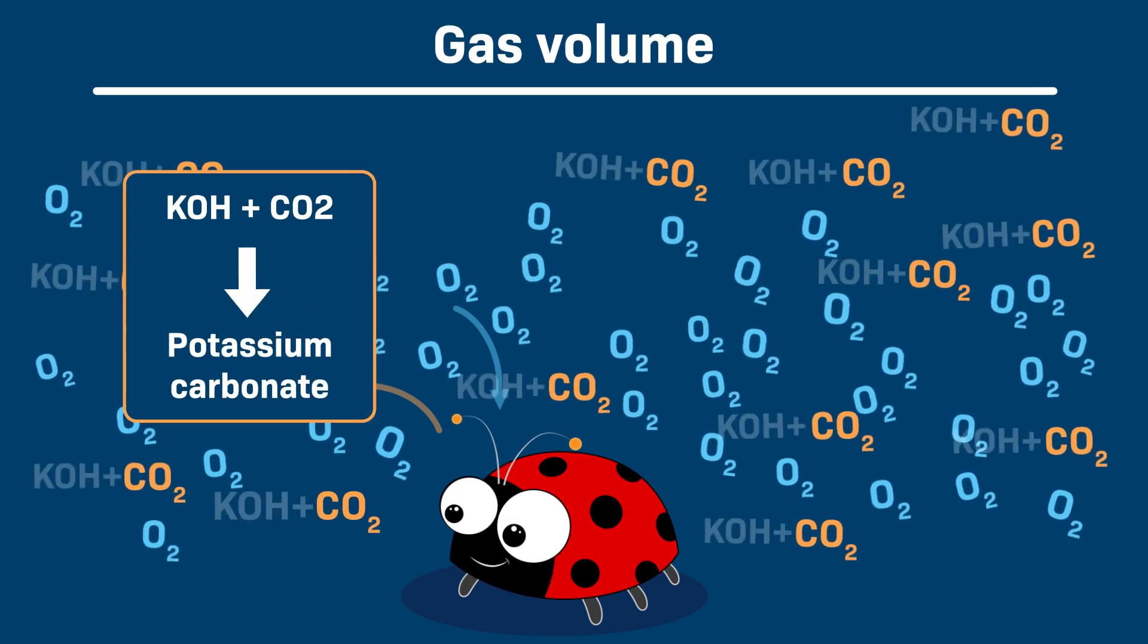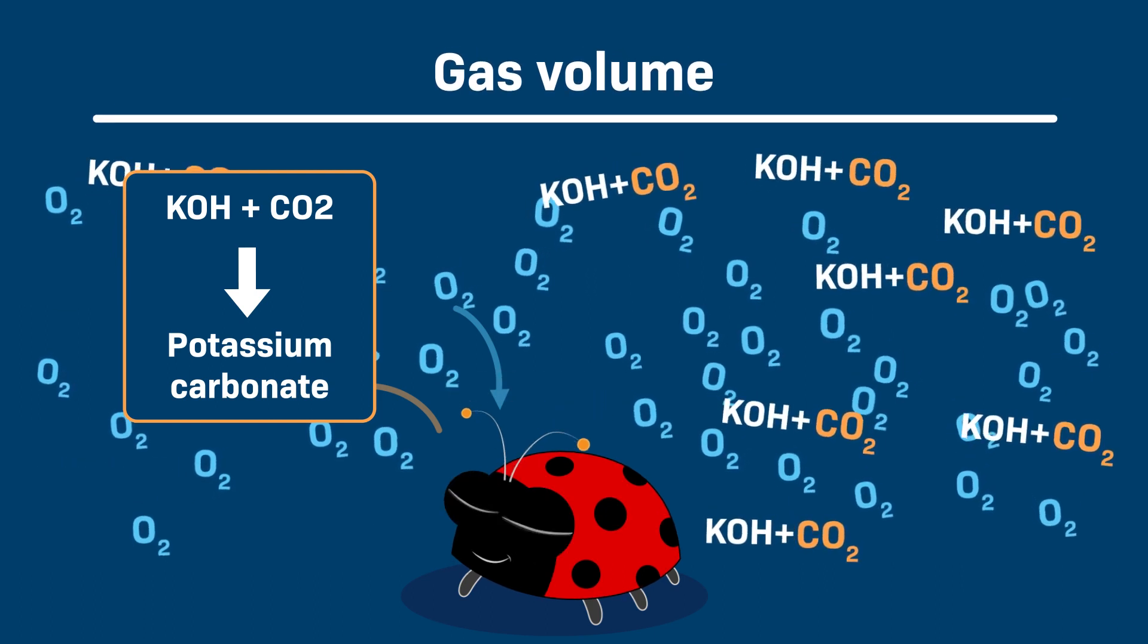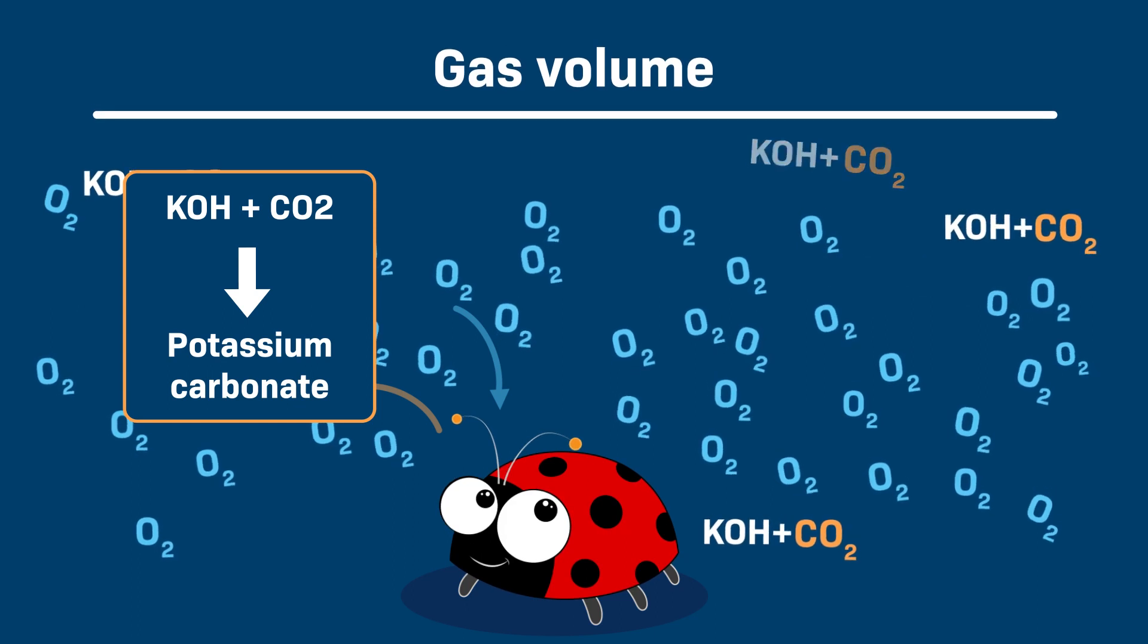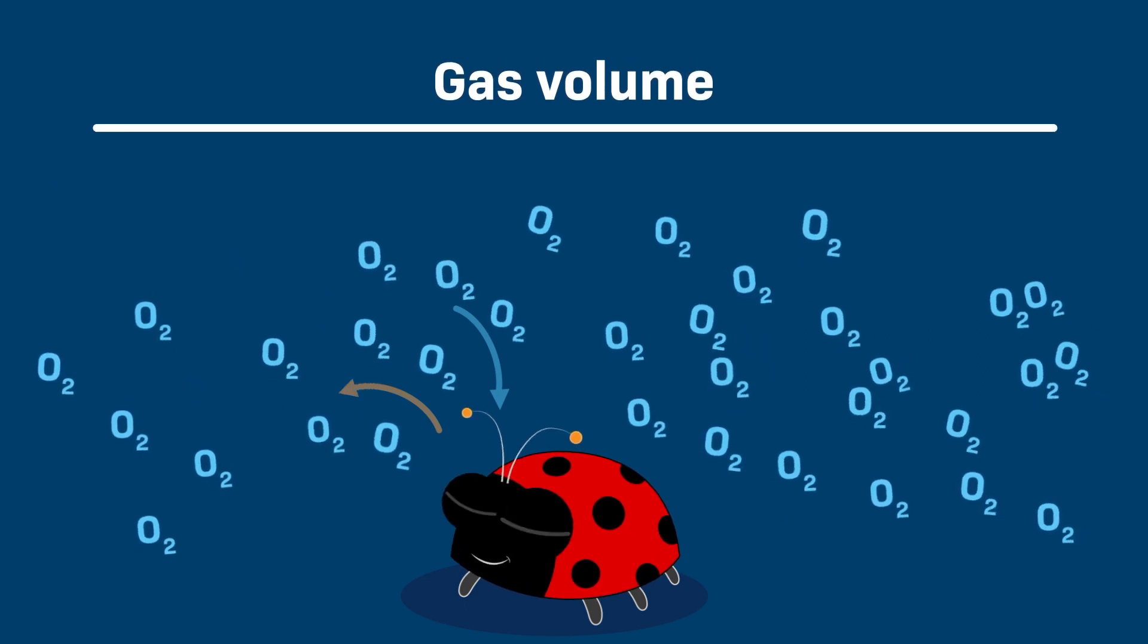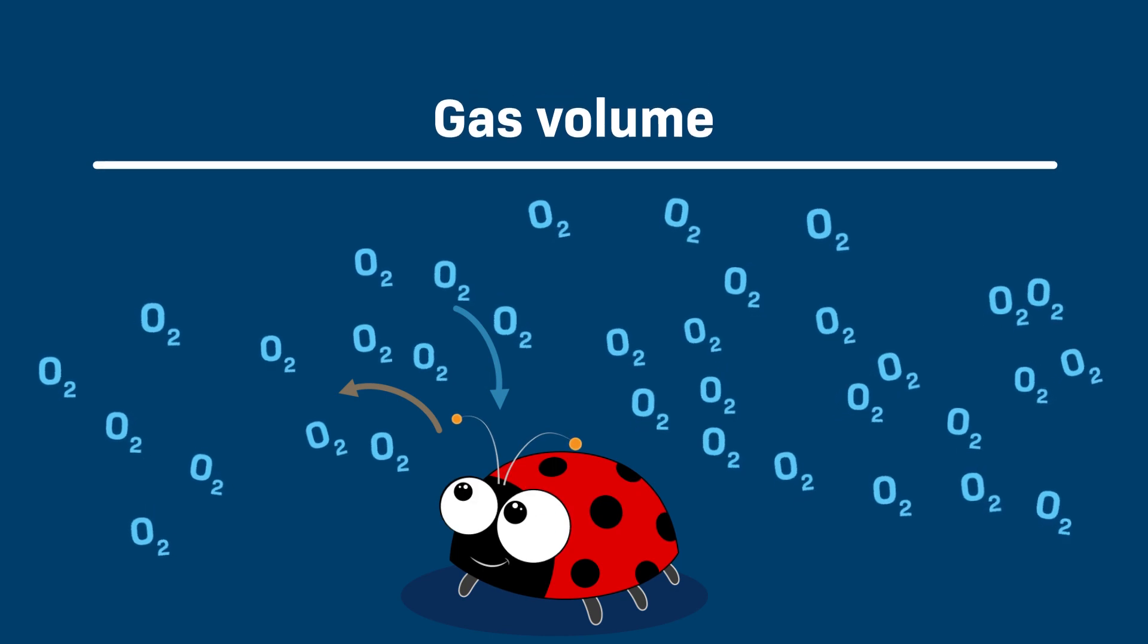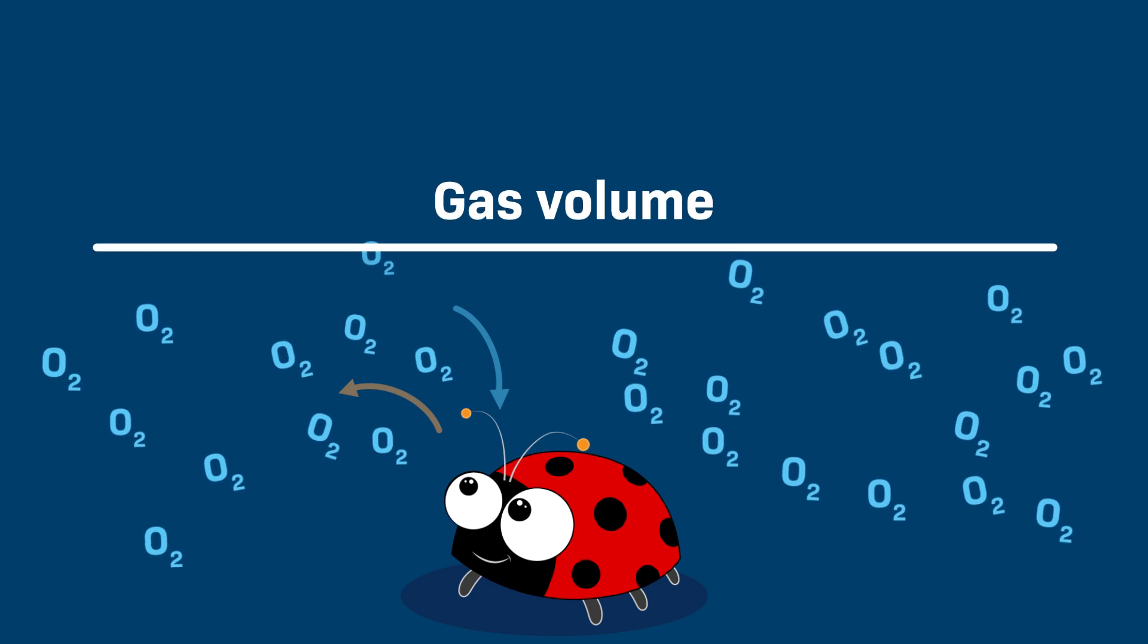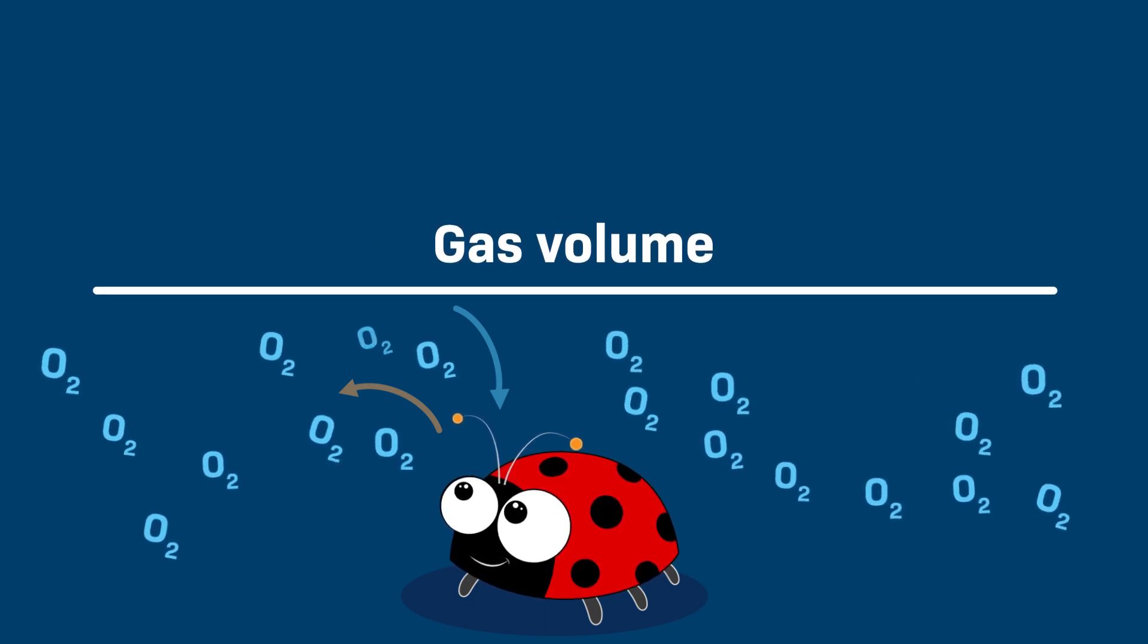So, we're going to add potassium hydroxide to our respirometers. It'll react with and eliminate the carbon dioxide to form a solid called potassium carbonate. This means that as cellular respiration proceeds, the gas volume in the micro-respirometer will decrease because oxygen gas is being consumed without being replaced by carbon dioxide gas. That volume decrease is what we'll be measuring.